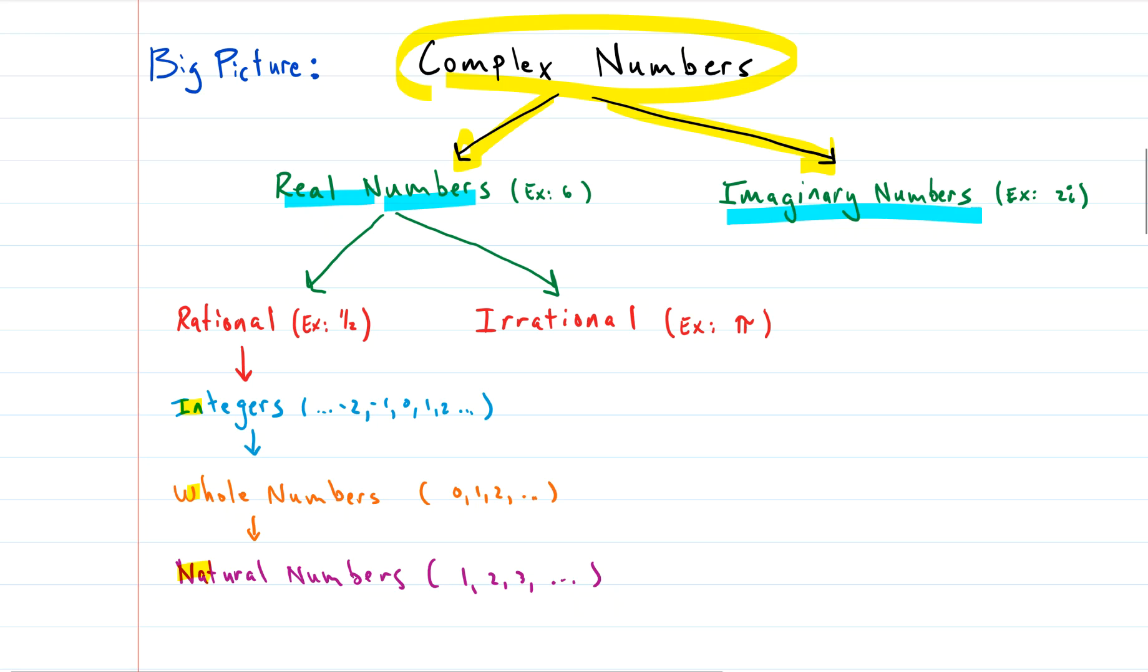Complex numbers have both real and imaginary parts. So a real number would be something like six, an imaginary number would be something with an i on it. And real numbers can be broken down even further.